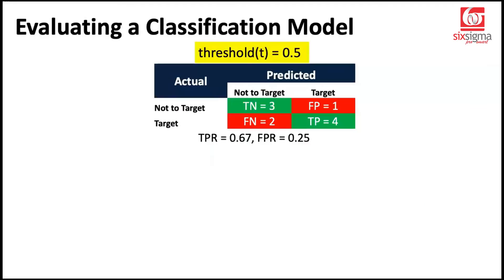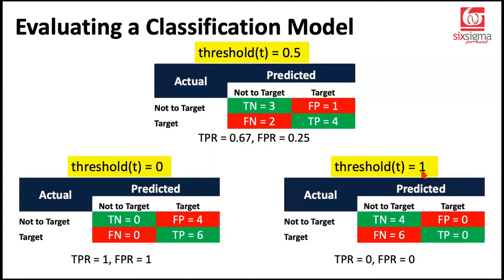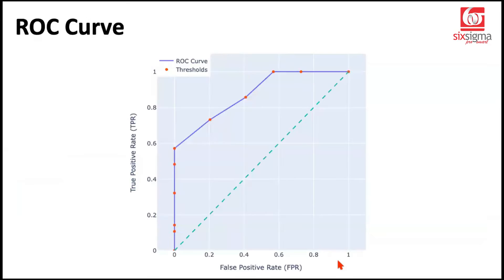To summarize: at threshold 0.5 we got some TPR and FPR values; at threshold 0, both TPR and FPR were 1; at threshold 1, both were 0. Upon changing the threshold, the confusion matrix numbers get modified, and TPR and FPR suggest different values. The ROC curve is exactly this — calculating TPR and FPR over a range of thresholds. The x-axis is the false positive rate and the y-axis is the true positive rate, and the points represent various thresholds.